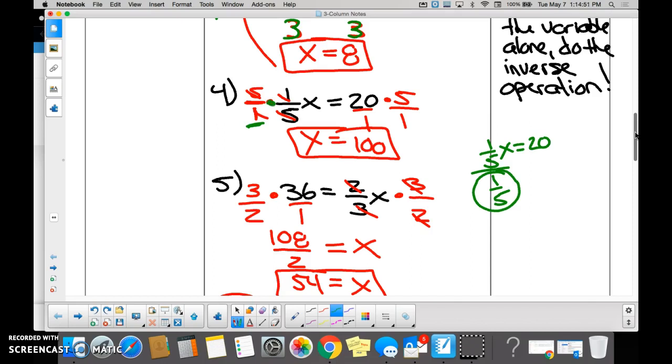So now we're multiplying by 5 over 1 on one side, and we're multiplying by 5 over 1 on the other side. Cancel. What are we left with? X. And then 20 over 1 times 5 over 1 is 100.